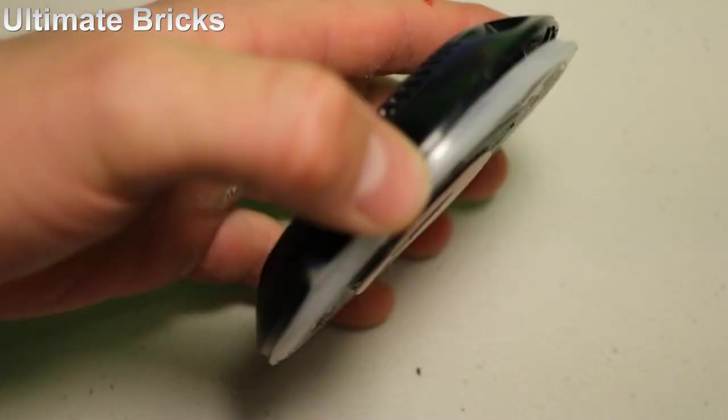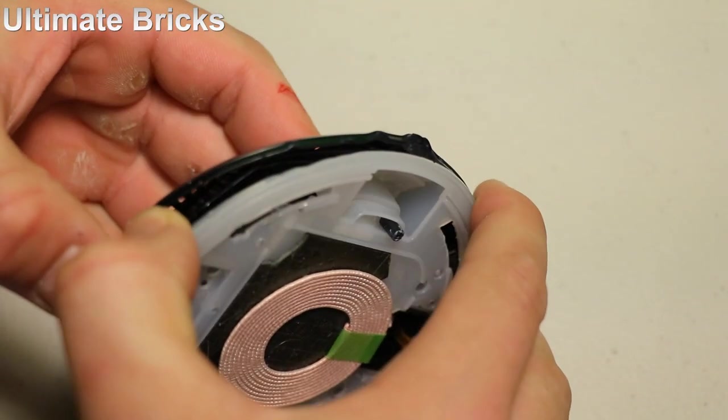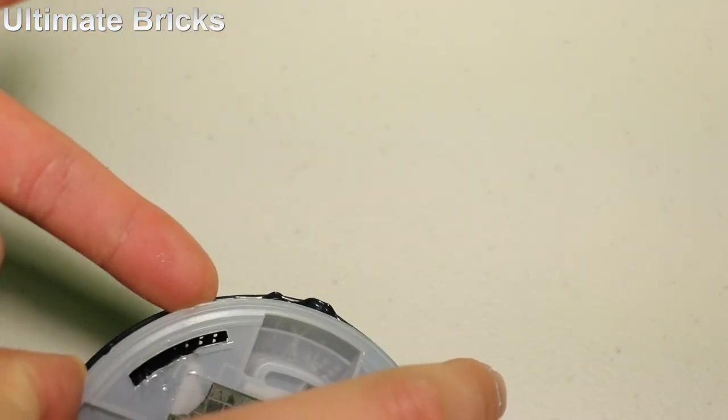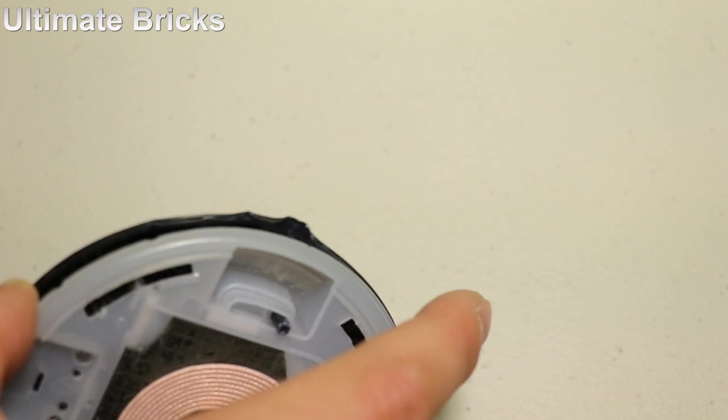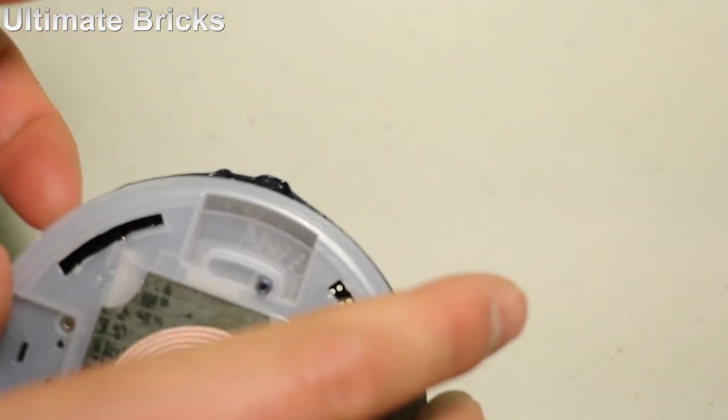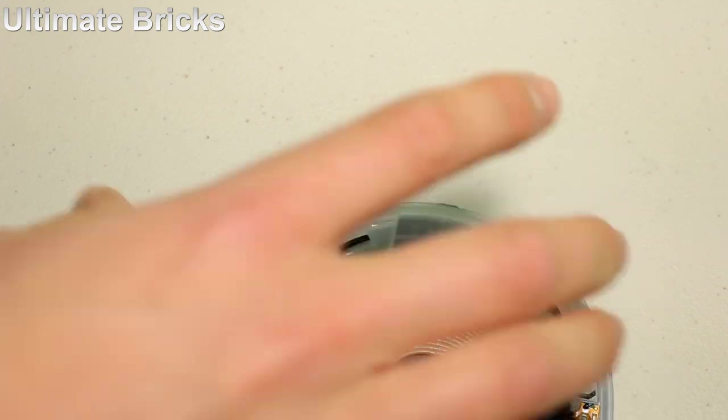All right, now for an update. I have kind of mangled it. I've been sticking the screwdriver into these holes and I'm starting to disconnect. Instead of disconnecting the top from the electronics, it seems like the electronics are attached to the white part before they're attached to the black part. So I'm going to try to pry off the black part.